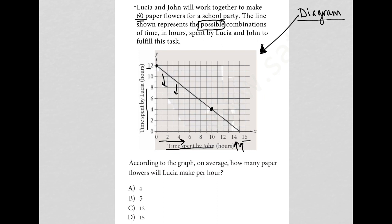And if I were to choose a point, let's say right here, that would mean that Lucia worked 4 hours and John worked 10 hours in order to produce those 60 paper flowers. Alrighty. So, let's look at the question.